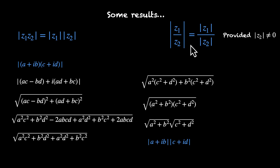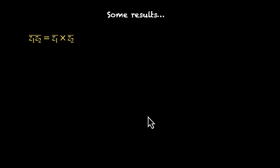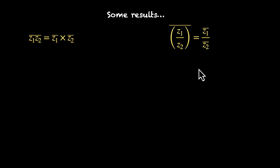You can prove the division property similarly, or by applying the multiplication result to a reciprocal — you can try that on your own. Moving to properties of conjugates: if you multiply z1 and z2 and then take the conjugate, it equals the product of their conjugates. This also works for division: (z1/z2)-bar = z1-bar / z2-bar, provided |z2| ≠ 0.